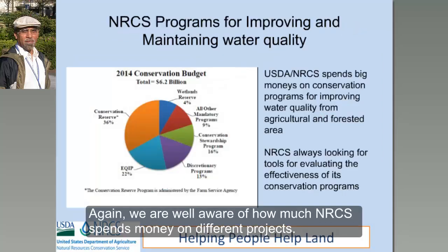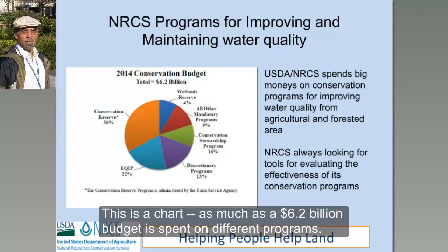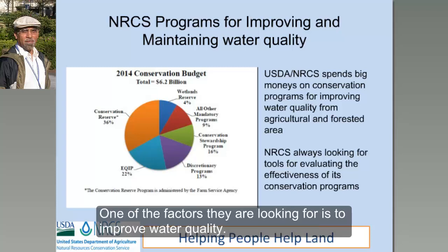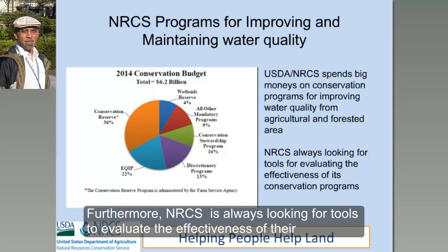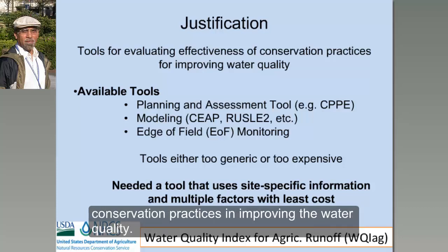We are all well aware of how much NRCS spends on different conservation projects to improve water quality. This simple chart shows as much as a $6.2 billion budget that NRCS spends on different conservation programs, one of the goals being to improve water quality. Furthermore, NRCS is always looking for tools that can evaluate the effectiveness of their conservation practices in improving water quality.